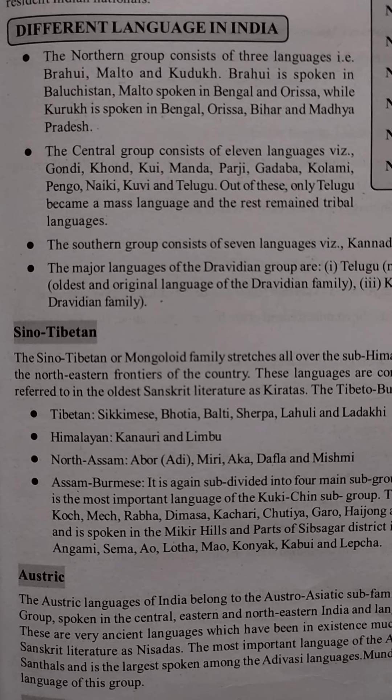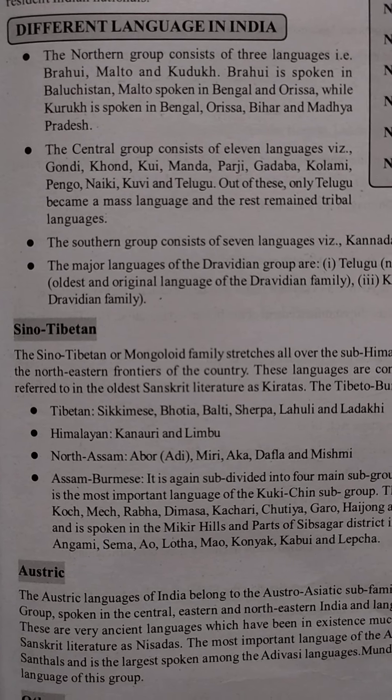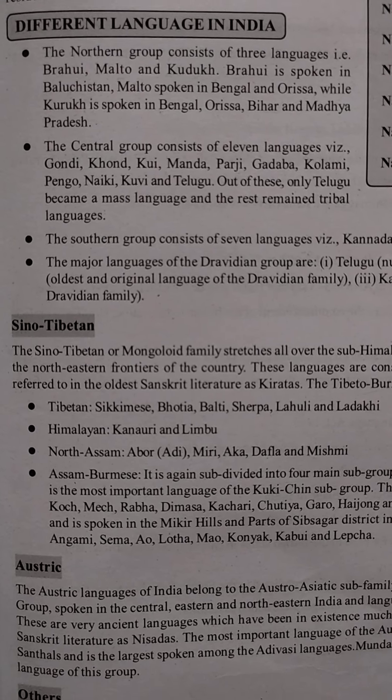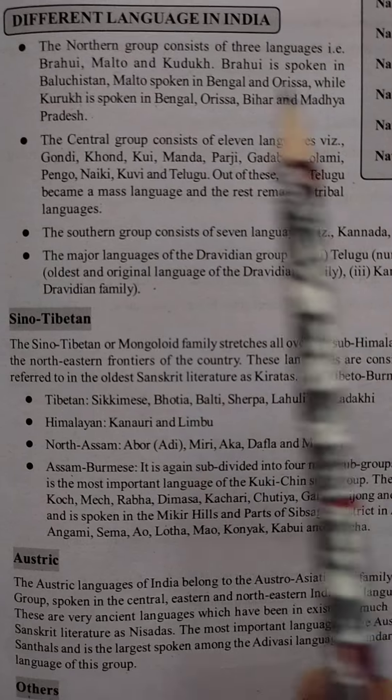The Northern group of Dravidian languages consists of 3 languages: Padovi, Malto, and Kutuk.